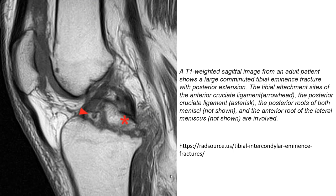Another example on a T1-weighted sagittal image from a patient with a comminuted tibial eminence fracture with posterior extension. The tibial attachment site of the anterior cruciate ligament is shown by an arrowhead, and the posterior cruciate ligament is marked by an asterisk. The posterior root of both menisci and the anterior root of the lateral meniscus are also involved.